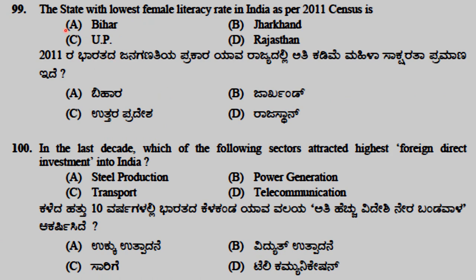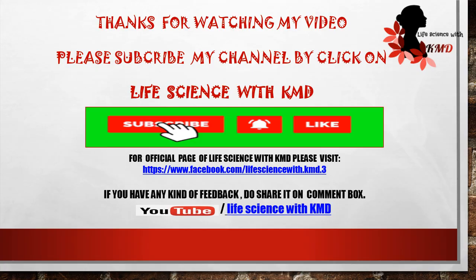The state with the lowest female literacy rate in India as per the 2011 census is Bihar. In the last decade, the sector that attracted the highest foreign direct investment into India is telecommunication.